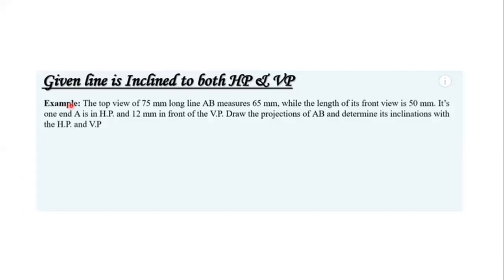Let us consider the given problem. The line AB is inclined to both HP and VP and these are the given dimensions as listed out in the problem statement.